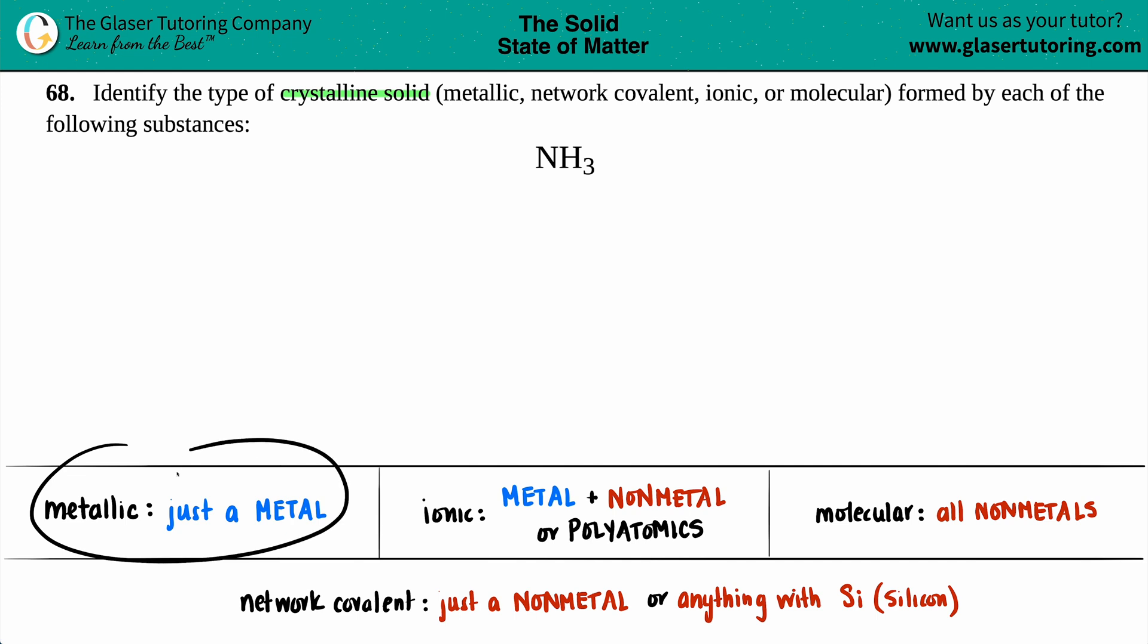Let's get started. We'll start from left to right. Would NH3 be a metallic crystalline solid? Well, metallic—the word metal is in the word metallic. So in order to be a metallic crystalline solid, you should just have a single metal, no non-metals. But if I look on the periodic table, nitrogen is a non-metal and hydrogen is also a non-metal. So I don't have any metals here in ammonia. Ammonia is a covalent compound, so it can't be metallic.